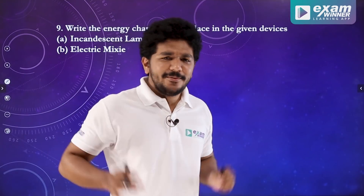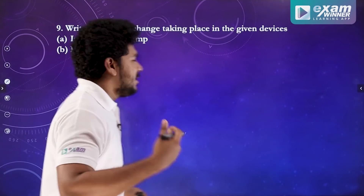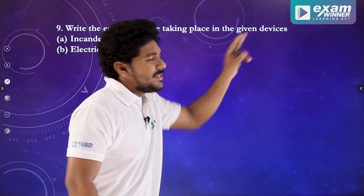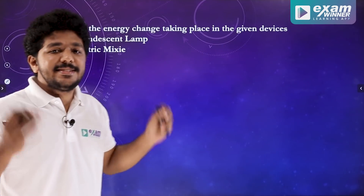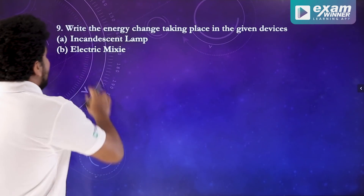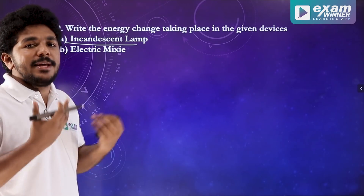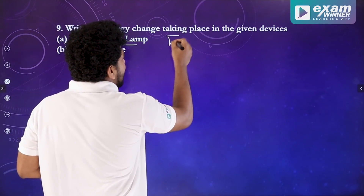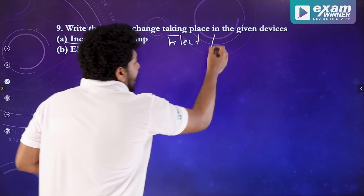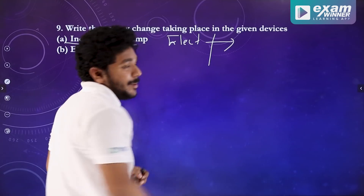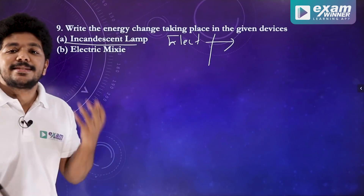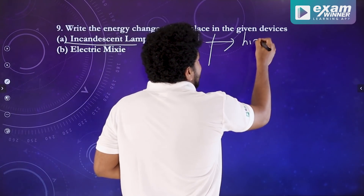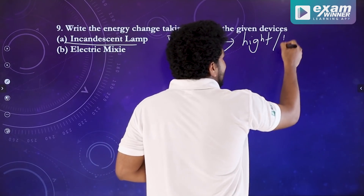Now we have two more questions. There is a window symbol. The change is a given energy change. In the incandescent lamp, we have to use electrical energy. We have to use light energy. Now we have to use heat energy.